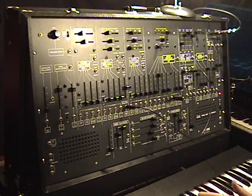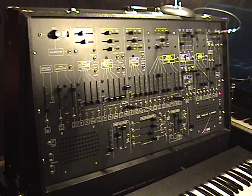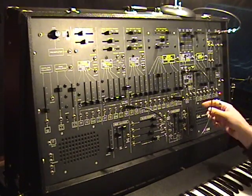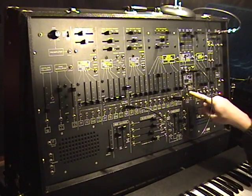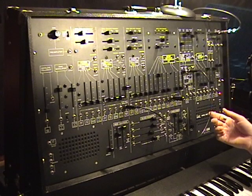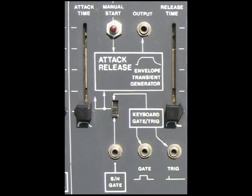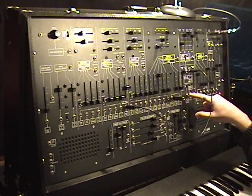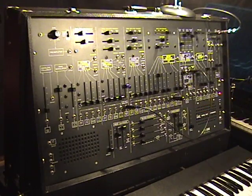Well, there are a couple of ways you can do this. One of them is with the envelope. What we have over here on this envelope — which we'll talk about probably in the envelope section as well — there's a switch that has sample and hold gate. Basically, it's using the sample and hold oscillator's square wave to trigger the AR envelope.